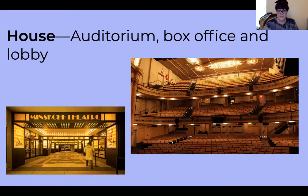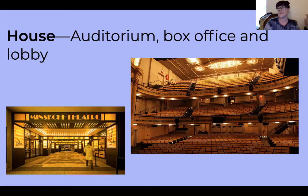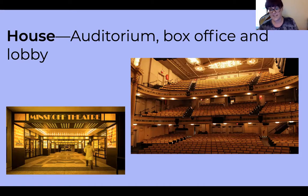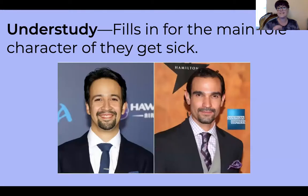The next term is the house of a Broadway musical. I've put some pictures just to give you some reference. Each Broadway musical does not look exactly like this — not every single one is going to have the exact same seating or entrance. They're all different. The house is the auditorium, the box office, and the lobby, which is pretty much everything together — where you sit, where you get your concessions like snacks, and the box office is where you actually get your tickets.